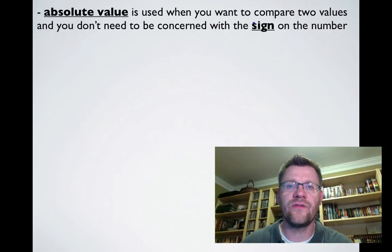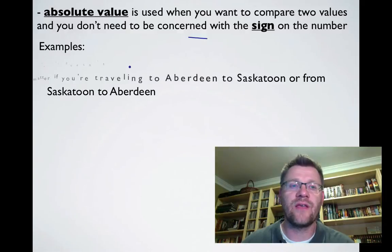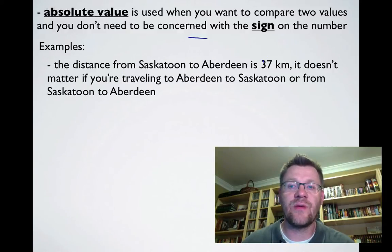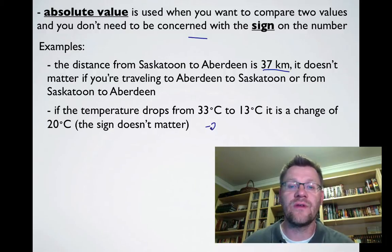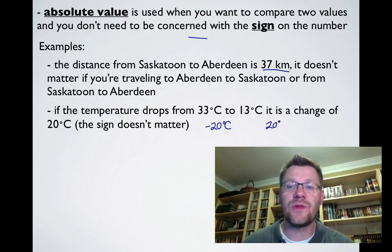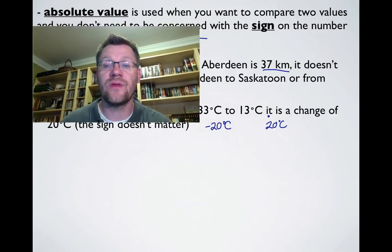Absolute value is used when you want to compare two values and you don't need to be concerned with the sign on the number. For example, the distance from Saskatoon to Aberdeen is 37 kilometers — it doesn't matter which direction you travel. Another example: if the temperature drops from 33 degrees to 13 degrees, we say it's a change of 20 degrees. We use absolute value to express that the change is 20 degrees, regardless of whether it's increasing or decreasing.